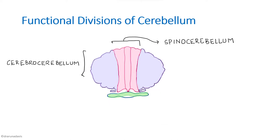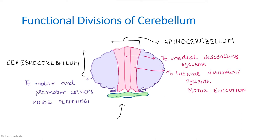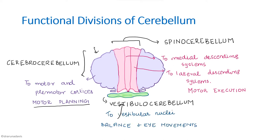The spinocerebellum receives information from the spinal cord and gives output to the medial and lateral descending systems, so it is mainly involved in motor execution. The cerebrocerebellum receives information from the cortex and gives output to the motor and premotor cortices, making it involved in motor planning. The vestibulocerebellum mainly projects to the vestibular nuclei and is involved in balance and eye movement.